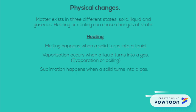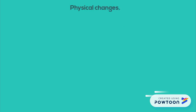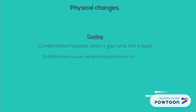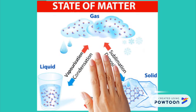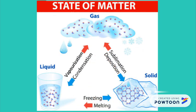And sublimation happens when a solid turns into a gas. When cooling: condensation happens when a gas turns into a liquid; solidification occurs when a liquid turns into a solid; and reverse sublimation happens when a gas turns into a solid. Here is a drawing with the changes in matter, where you can see red arrows for heating and blue arrows for cooling.